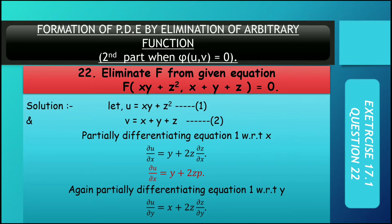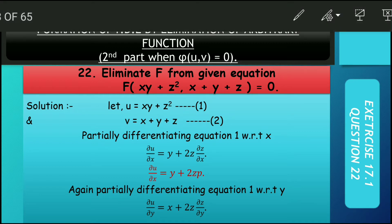Question number 22: first, eliminate the arbitrary function from the given equation. The equation involves xy + z².